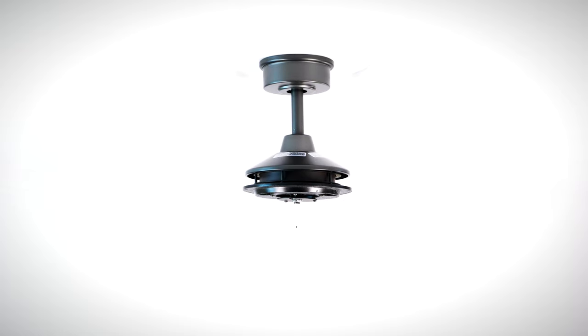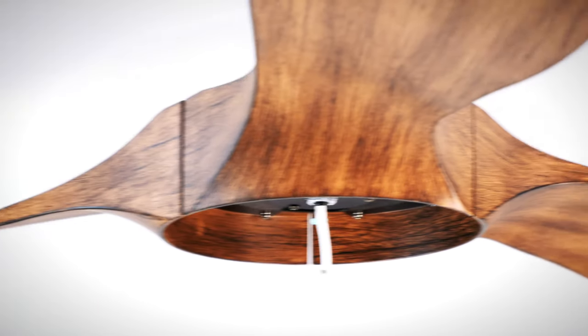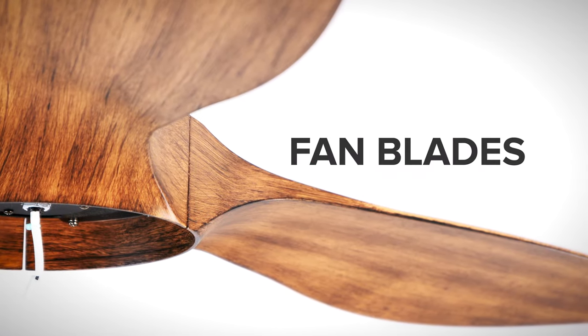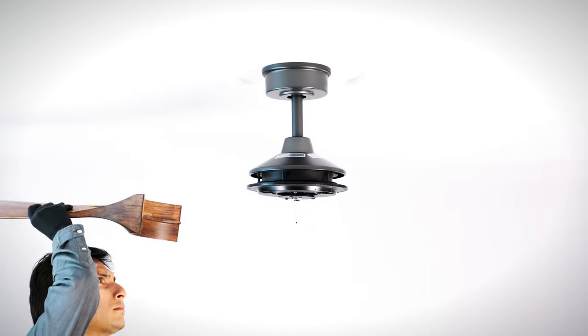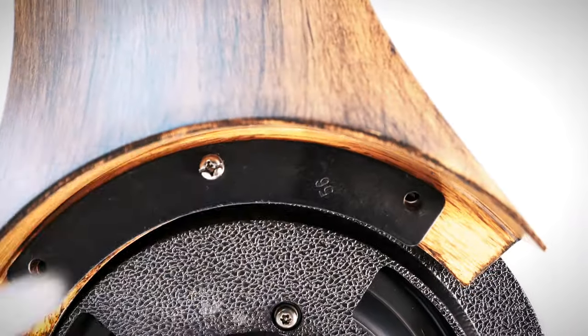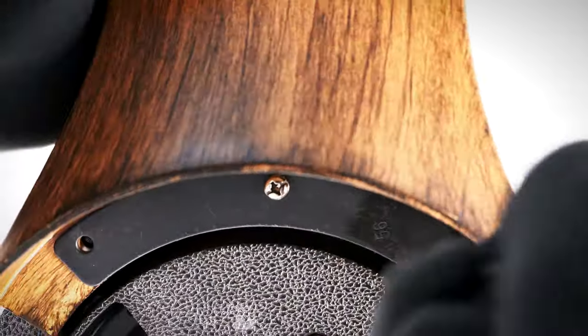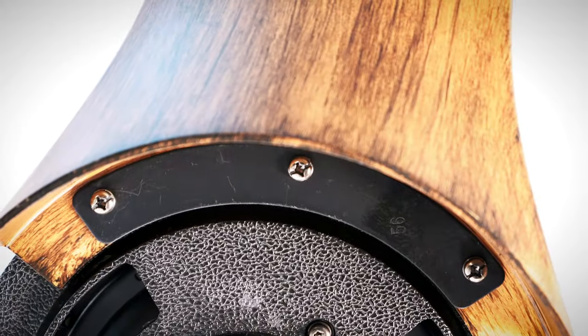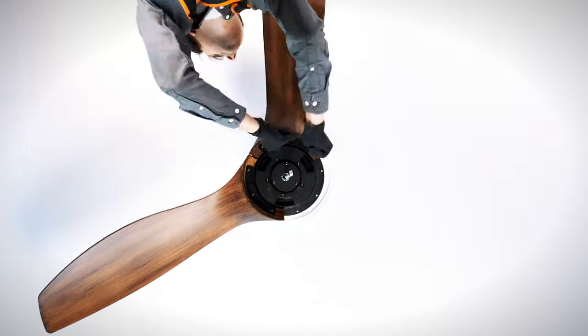The fan blades are now ready to install. Bring a fan blade up to the fan and align it underneath the motor. Align the blade support plate holes, then insert and tighten three blade attachment screws. Repeat the process for the remaining blades.